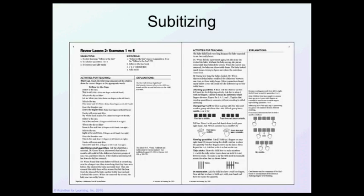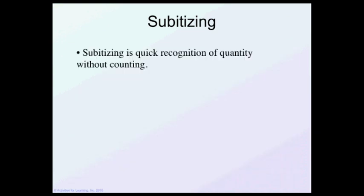The first thing that we're going to talk about is subitizing. This is coming from Level B lesson, a review lesson one to five subitizing. We're going to work with this first because I want to show you how important that is when we use that with the Abacus.